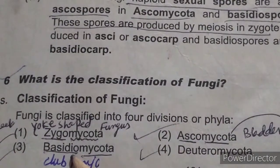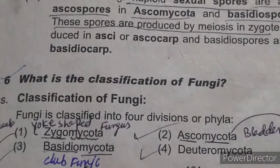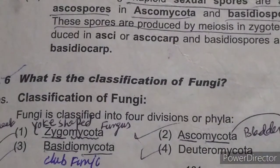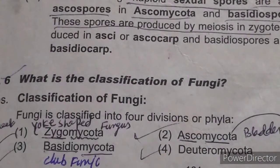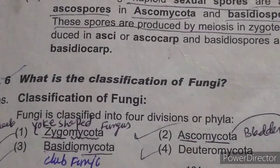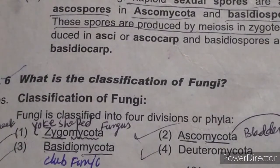Basidiomycota: 'Basidio' means club. This fungus is club-shaped. This is also based on the shape of the fungus, and 'basidio' means club-shaped.